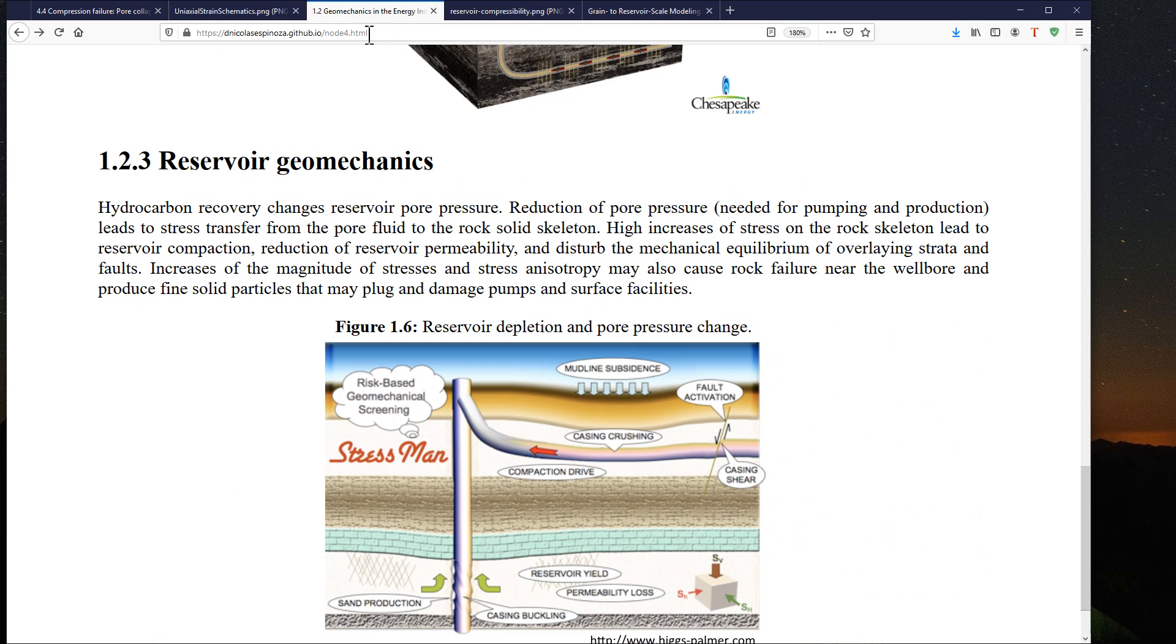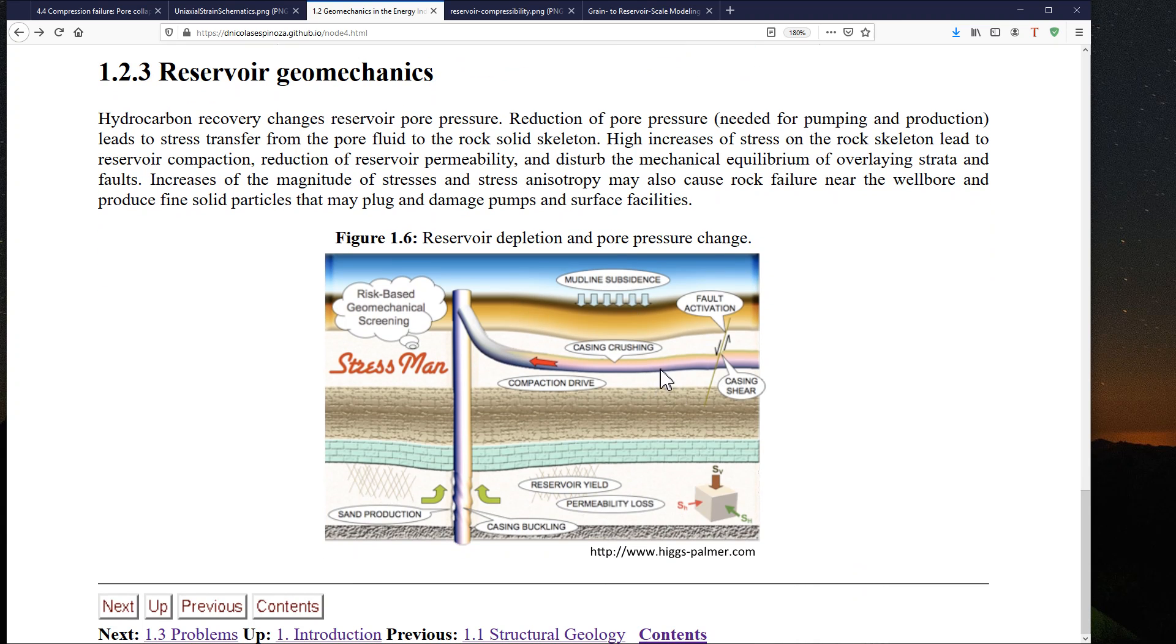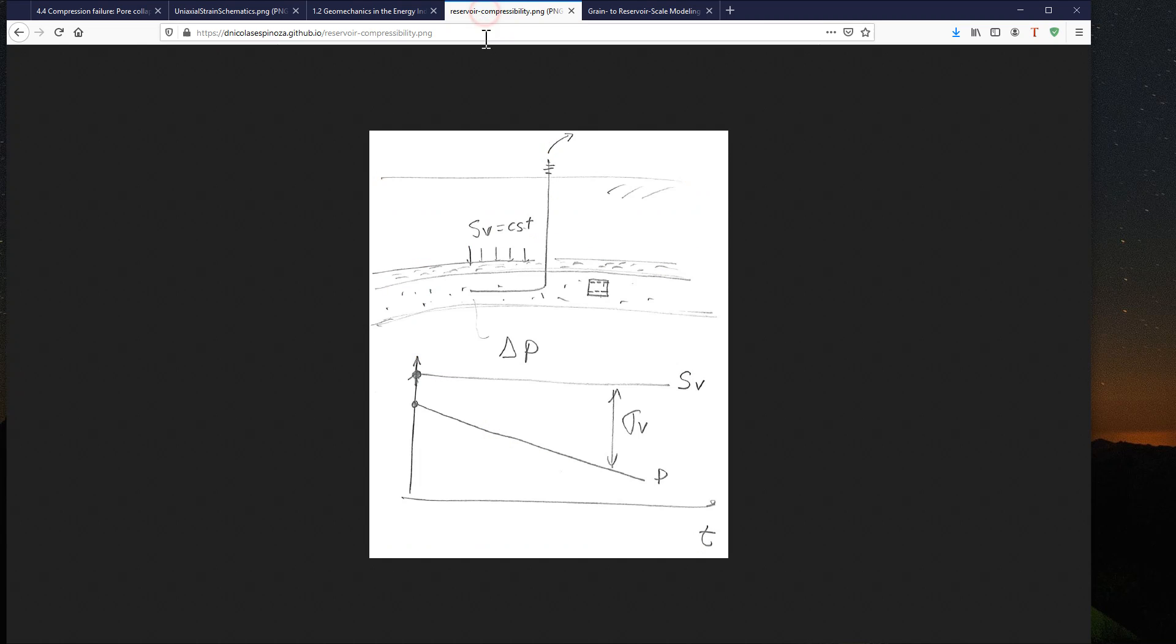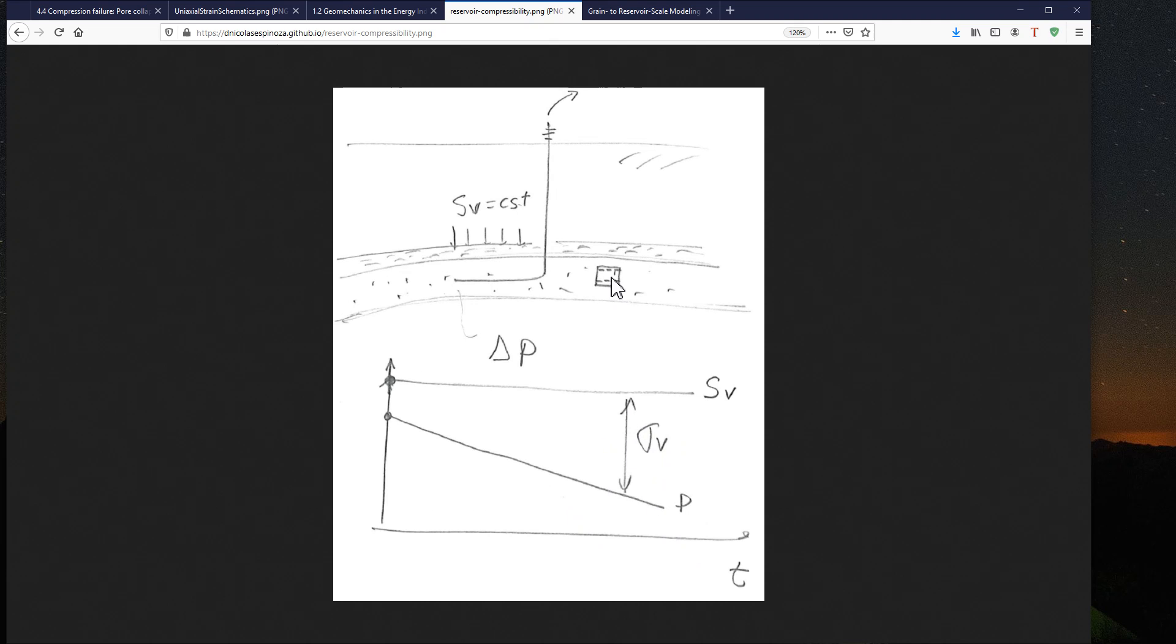But also, this can happen in a relatively short amount of time when we have depletion. For example, in this case, if we deplete this reservoir formation as we lower the pore pressure, effective stresses are going to increase with time. The result of that increase of effective stress, plotted here now as a function of time, is going to result in a compaction, in a compaction that most likely, if the formation is much longer in horizontal direction than its thickness and if the caprock is compliant, is going to be a one-dimensional strain compaction.